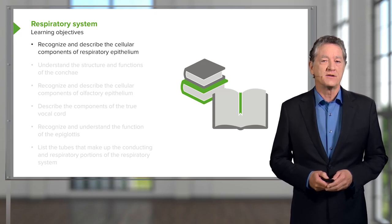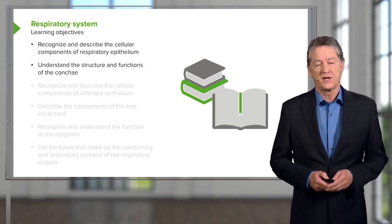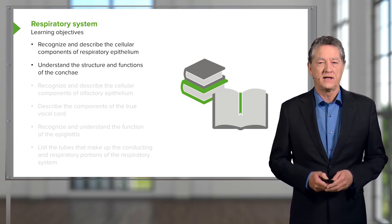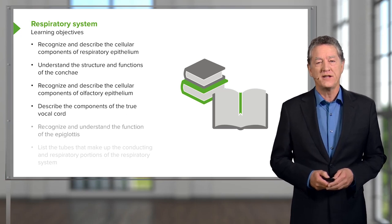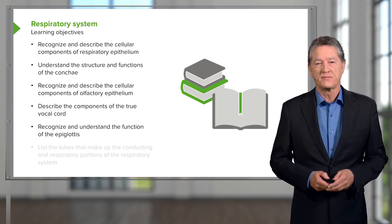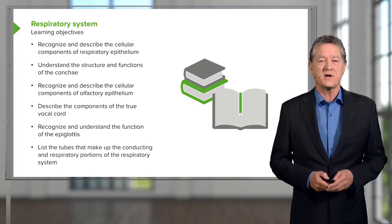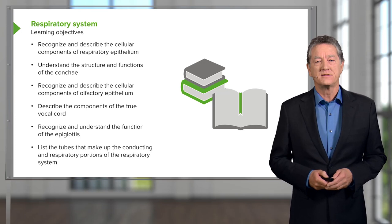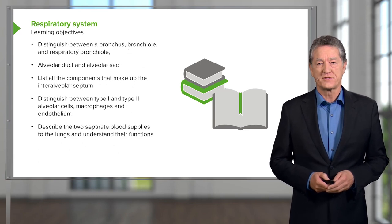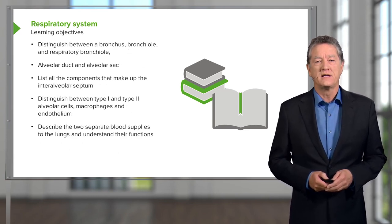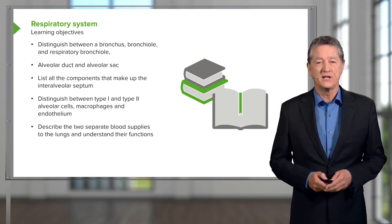It's important you understand what respiratory epithelium is and what the functions of the conchi in the nasal cavity are, and we'll also have a look at the very specialized epithelium that helps us to smell. The vocal cords in the larynx and the epiglottis are very important structures, and then it's important you understand the structures of all the airways that take the air from our nasal cavity all the way down to the lungs for exchange. When we look at those airways, it's important you know the difference between a bronchus, a bronchiole, and the small bronchioles within the lungs that enable the transport of gaseous products from the air into the bloodstream.